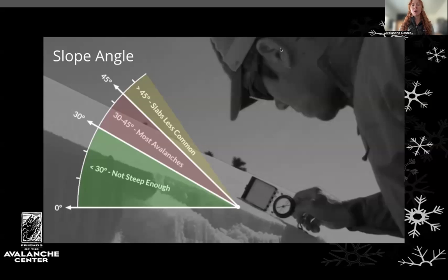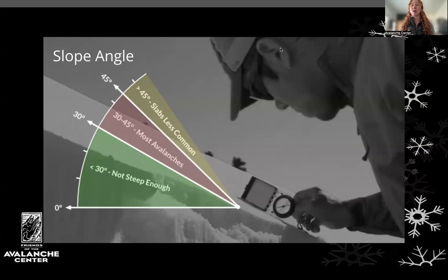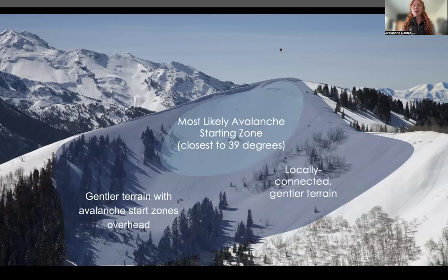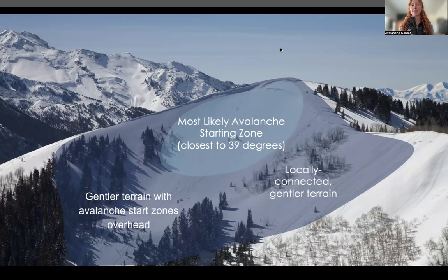Slope angle — most avalanches occur between 30 and 45 degrees. Anything below that is usually not steep enough to slide, though it does happen. Over 45 degrees, snow doesn't stay as long — it's constantly sloughing off, so slabs aren't as commonly formed. It's not always about what slope you're standing on. You have to think about what you're connected to. Am I down in the flats exposing myself to hazards above? Am I adjacent to these paths? You don't always have to be in the start zone to be in an avalanche path.